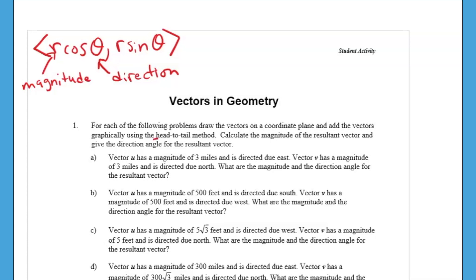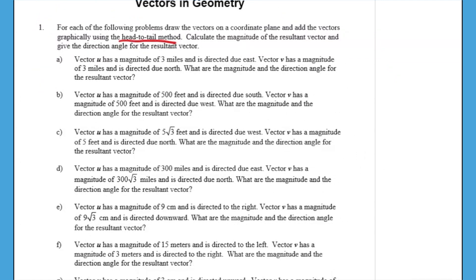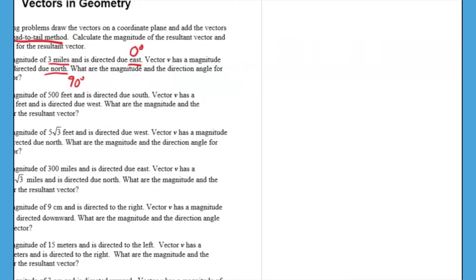You can see how they ask students to write it using the head-to-tail method, but we're going to use component form instead. For problem 1a: vector u has a magnitude of three miles and a direction of due east. Looking at the unit circle, east is zero degrees. Vector v has a magnitude of three miles directed due north, which is 90 degrees. Both vectors have magnitude three, one at zero degrees and the other at 90 degrees. We need to find the magnitude and direction angle for the resultant vector.